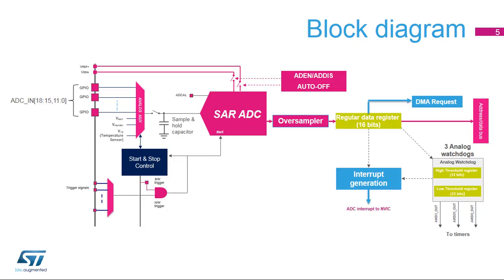This slide shows the general block diagram of the ADC. The left part describes the analog front end, based on the analog multiplexer and the embedded sampling capacitor of the ADC. This sampling time must be enough for the input voltage source to charge the sample-and-hold capacitor to the input voltage level. The right part is the digital backend, where samples are stored into a data register that is either read by software or transferred to memory via a DMA channel.